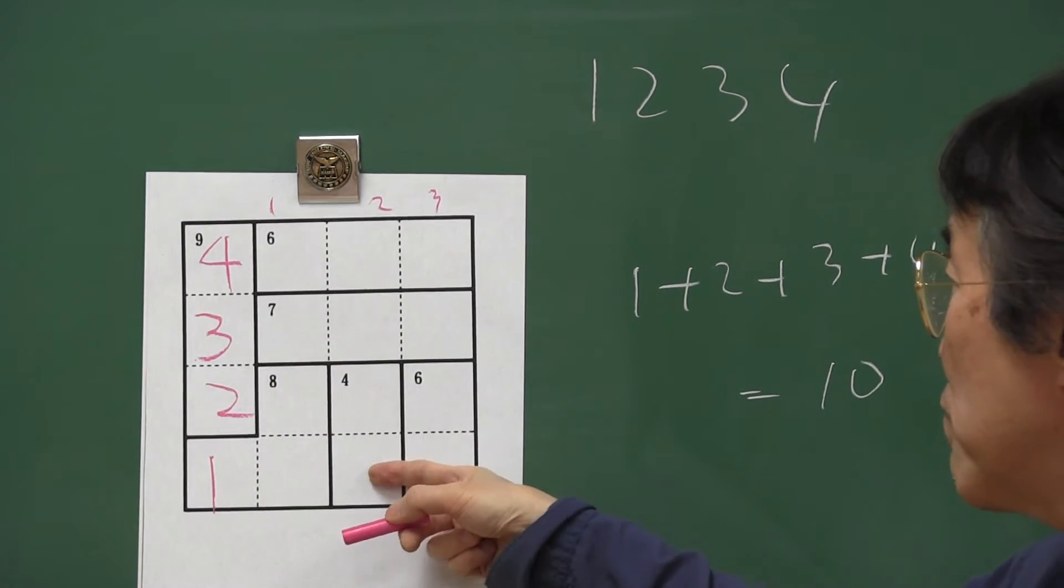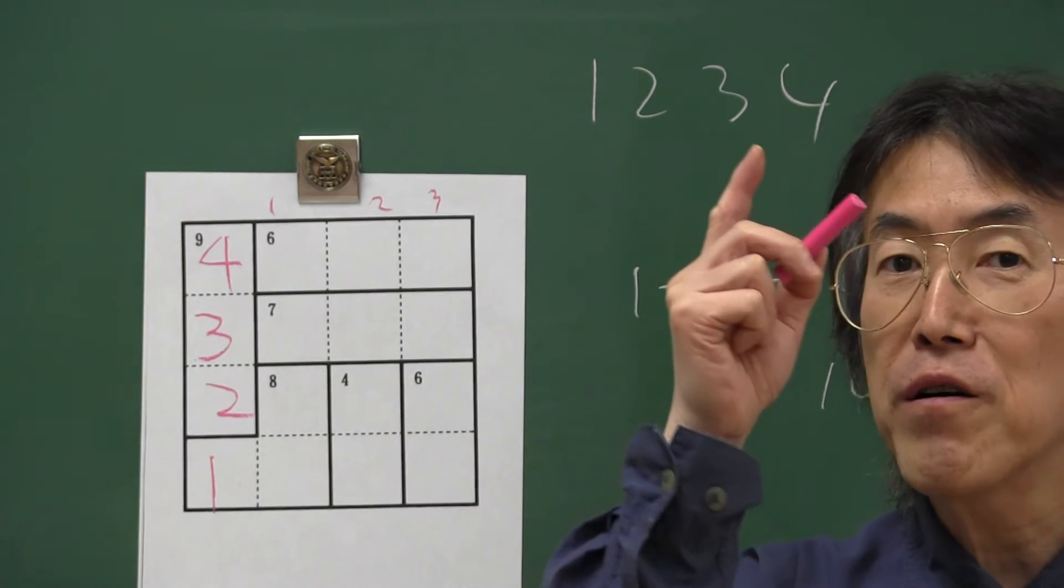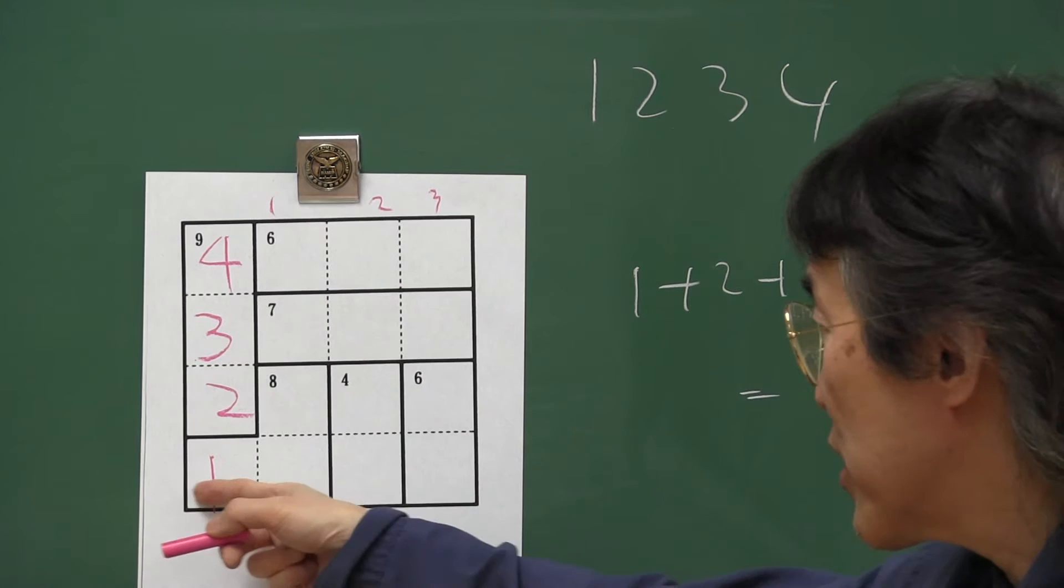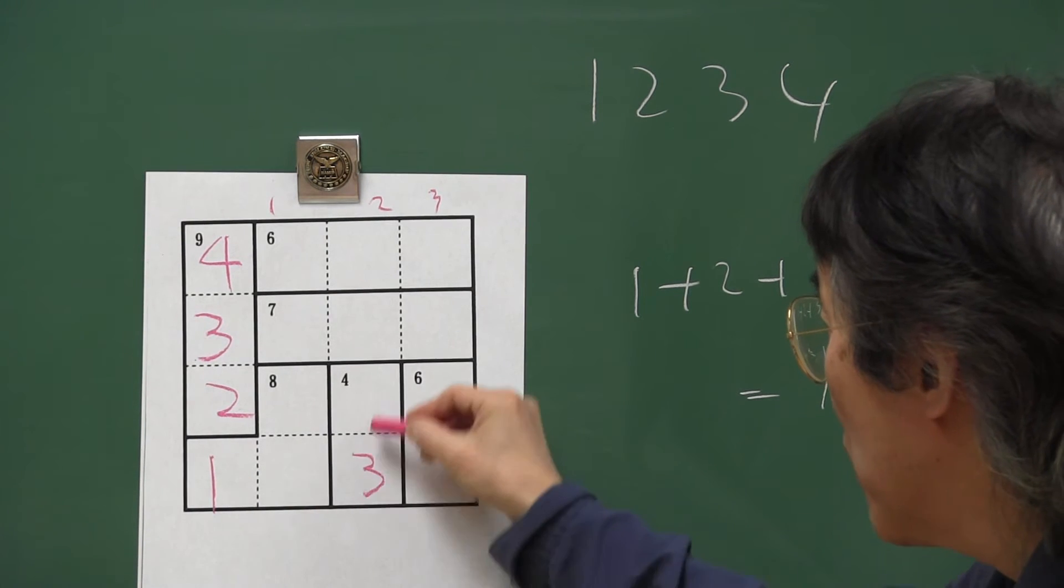Two numbers make four. Only one combination. Two and two is against the rule, so one, three. Here is one, then three, one.